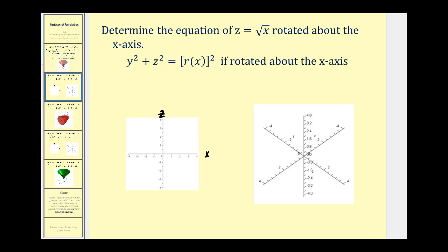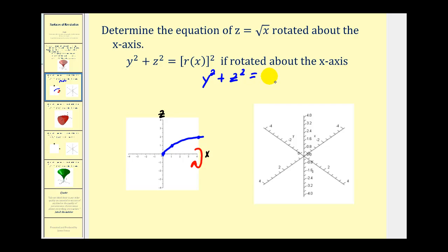When x is zero, z would be zero. When x is one, z would be one. When x is four, z would be two. So we're taking this function in the xz-plane and rotating it about the x-axis, producing a surface. The equation of that surface would be y² + z² = r(x)². Since r(x) is just √x, we have y² + z² = (√x)², so the equation of this three-dimensional surface is y² + z² = x.